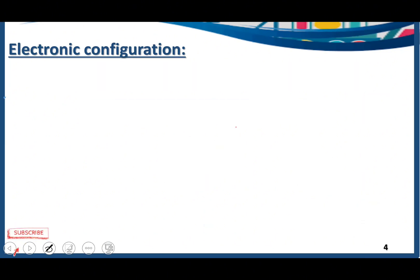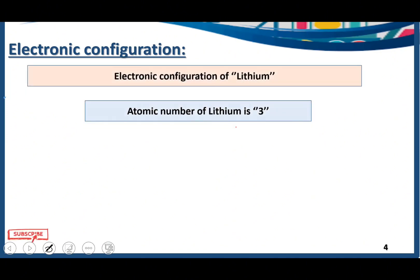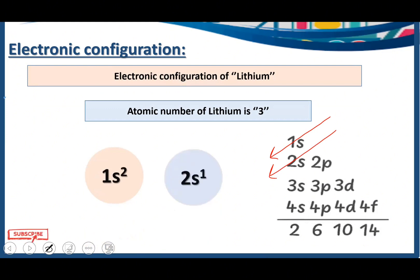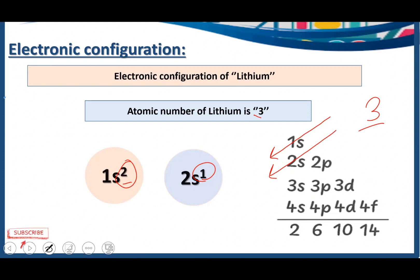Electronic configuration of the third element, lithium — atomic number 3. At first comes 1s, but in the s subshell we can only accommodate 2 electrons, so we need the help of 2s as well. The electronic configuration will be 1s2, then 2s1. Why 2s1? Because we are just left with 1 electron — we need to put 3 electrons total, so 2 electrons in 1s and 1 electron in 2s.